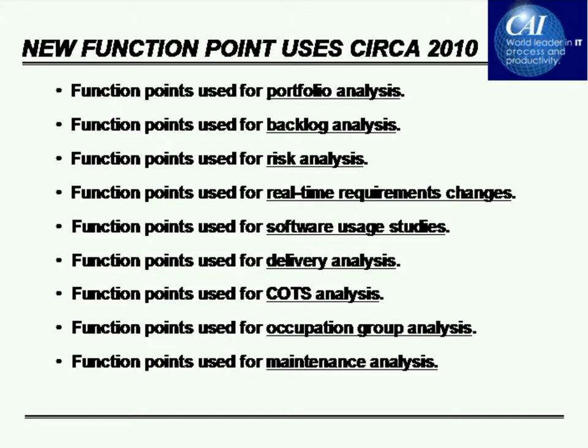You can look at function points for delivery of features such as cloud computing and software as a service, which is going to be another major use. You can also use them for measuring commercial off-the-shelf software such as Oracle, SAP, Microsoft Office, and Windows 7. In addition, you can look at them for measuring occupation groups — how many function points are ordinarily used by a project manager, a quality assurance person, a tester, a ship's captain, or an FBI agent. You can use function points to look at the usage of software by almost any kind of occupation group.